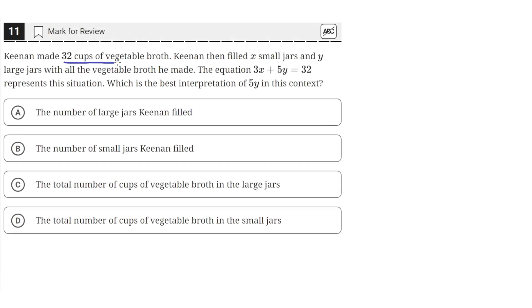Kenan made 32 cups of vegetable broth. Kenan then filled x small jars and y large jars with all the vegetable broth he made. The equation 3x plus 5y equals 32 represents this situation.